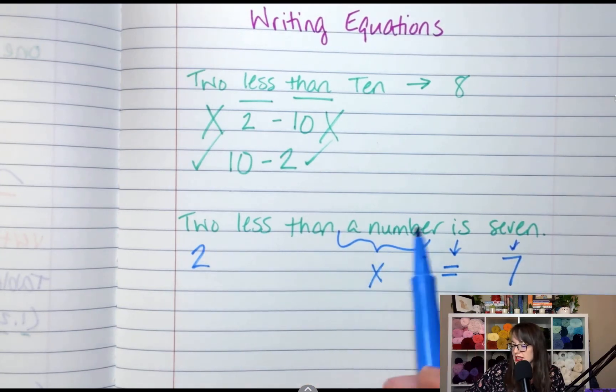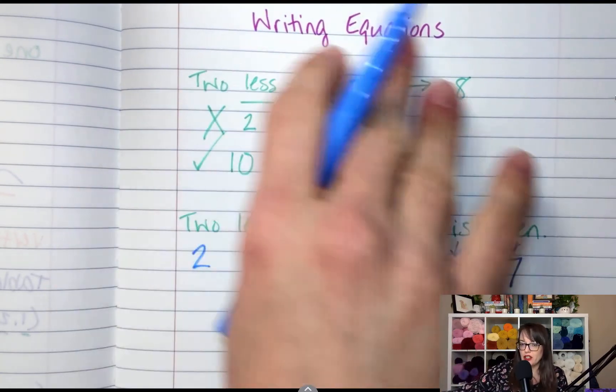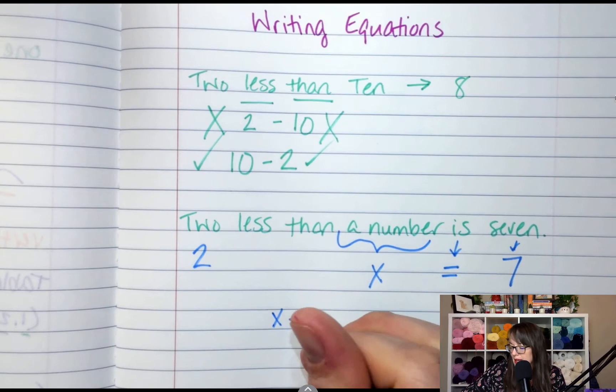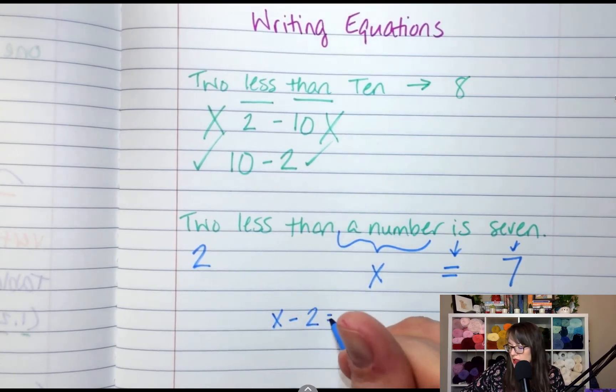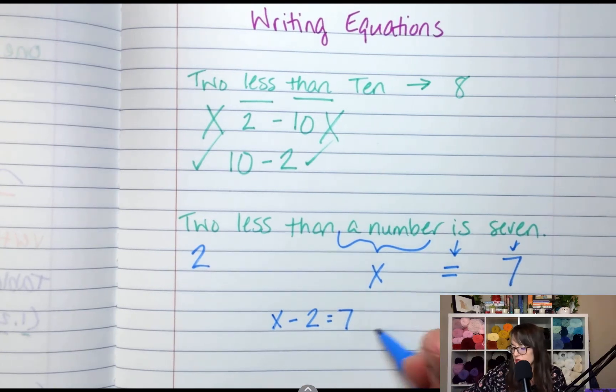So we've got 2 less than a number. We're going to say X equals 7. Now, using this information, what should your equation look like? X minus 2 equals 7. So what is X? X is 9 in this situation.